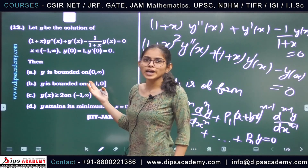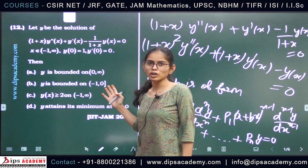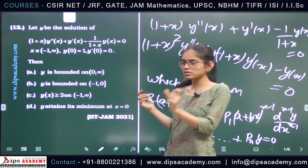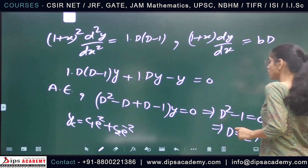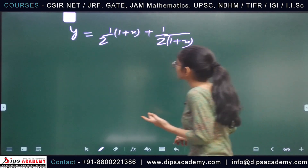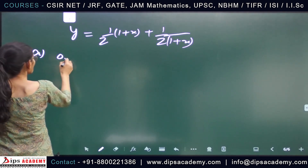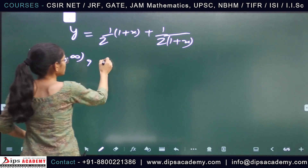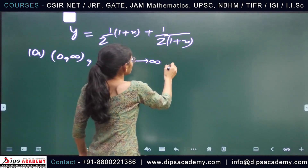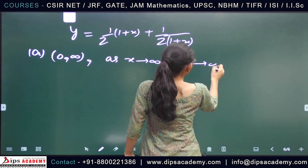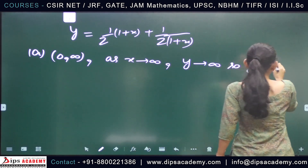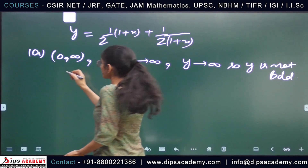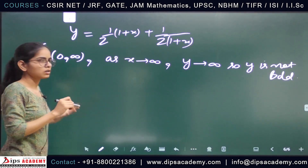Option A says y is bounded on (0, ∞). However, as x → ∞, y = (1/2)(1+x) + 1/(2(1+x)) → ∞ because of the (1+x) term. So y is not bounded on (0, ∞), and option A is incorrect.